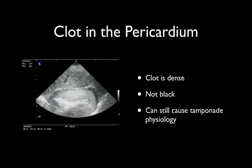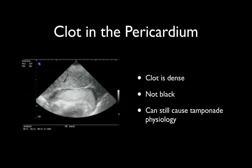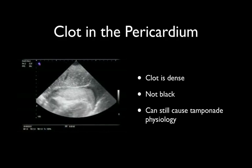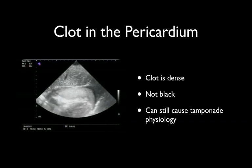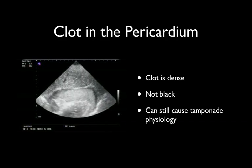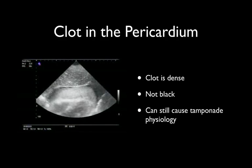Not all pericardial effusions are black. This is an example of clot within the pericardium, which can occur in traumatic pericardial tamponade or postcardiotomy. Even a smaller volume within the pericardium can still cause tamponade physiology — as little as 50 mils of clot can cause tamponade.